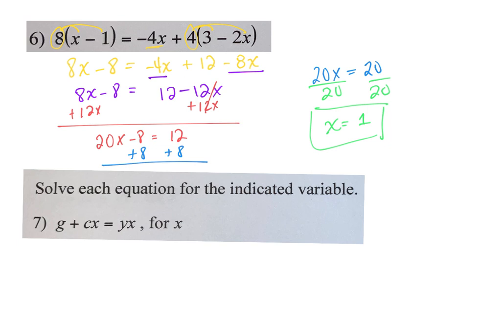Solve for the indicated variable. Each one will tell you what variable you're solving for. In this case, they want us to solve for x. We want to get everything with an x to one side, everything without an x to the other. We want to use distribution to factor it out, then divide. That's the basic process. I would subtract that cx over.